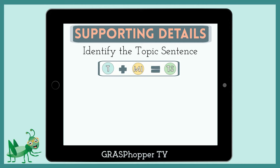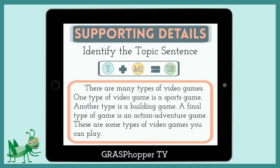Next, we find the topic sentence. We're going to look for a sentence that has both the topic and the main idea of the paragraph. After reading, we know the topic of the paragraph is video games, and the main idea is types of video games. Here is the sentence that combines those parts: there are many types of video games. This is the topic sentence.